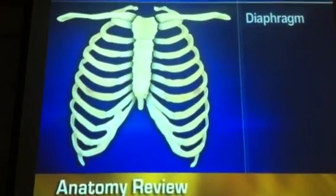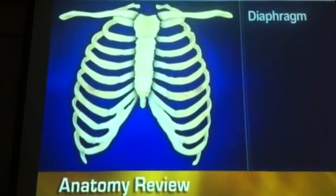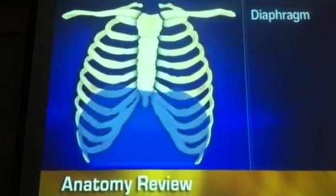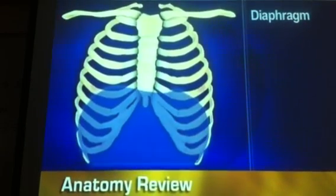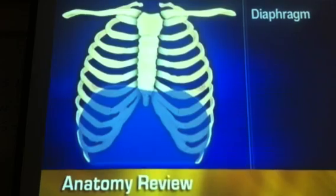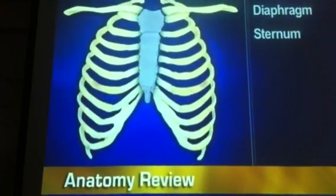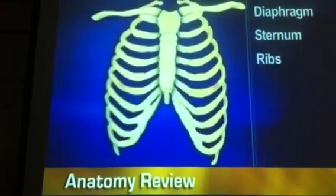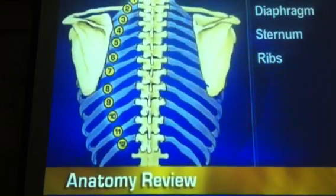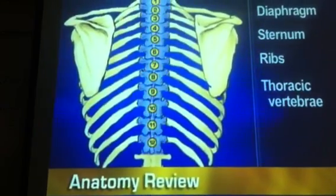Before examining the thorax and lungs, consider their anatomy. Recall that the diaphragm separates the thoracic cage from the abdomen, and that the thoracic cage is defined by the sternum, 12 pairs of ribs, and 12 thoracic vertebrae.